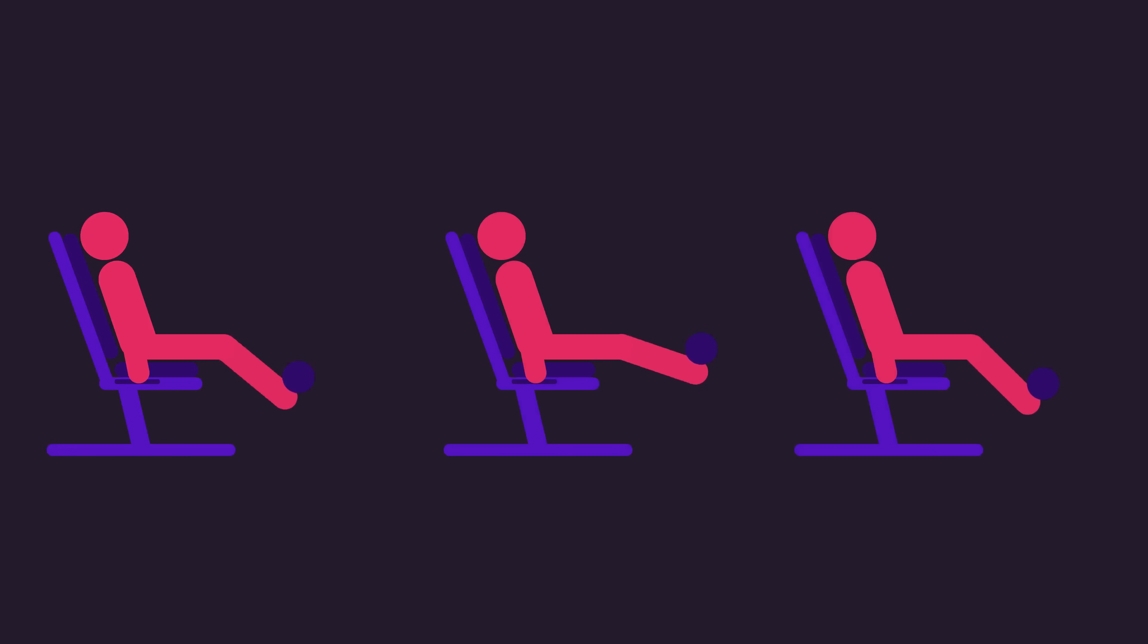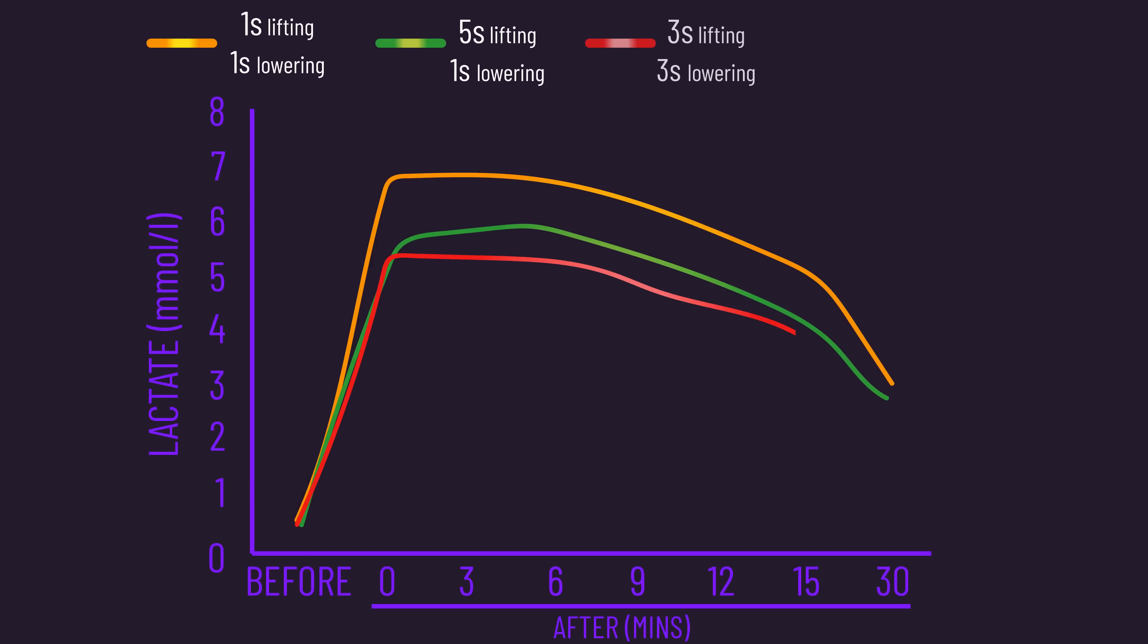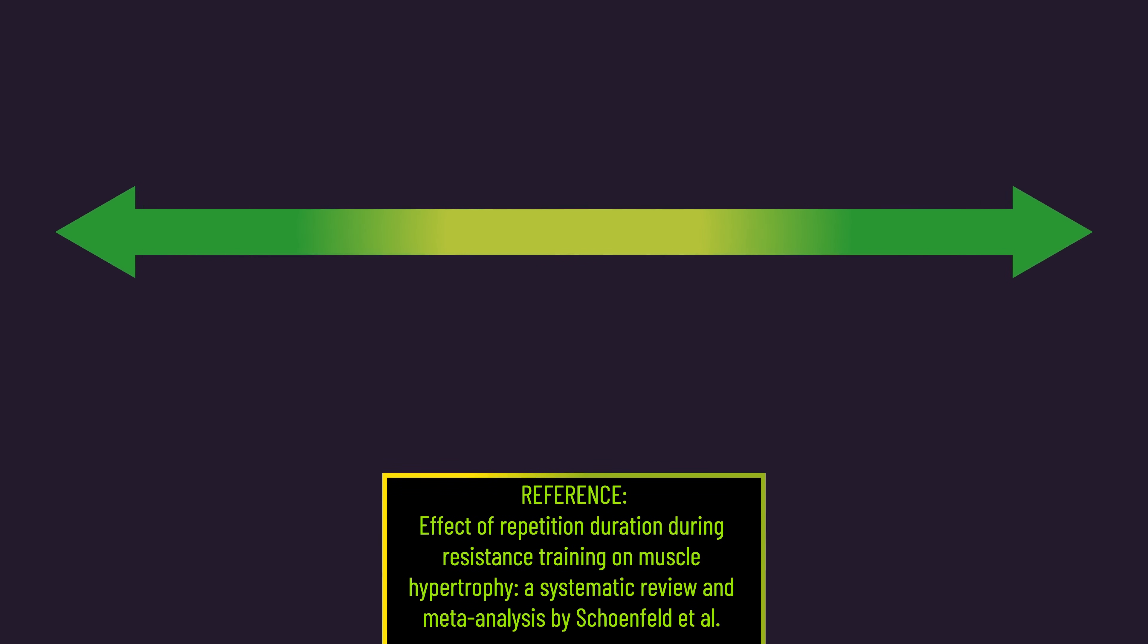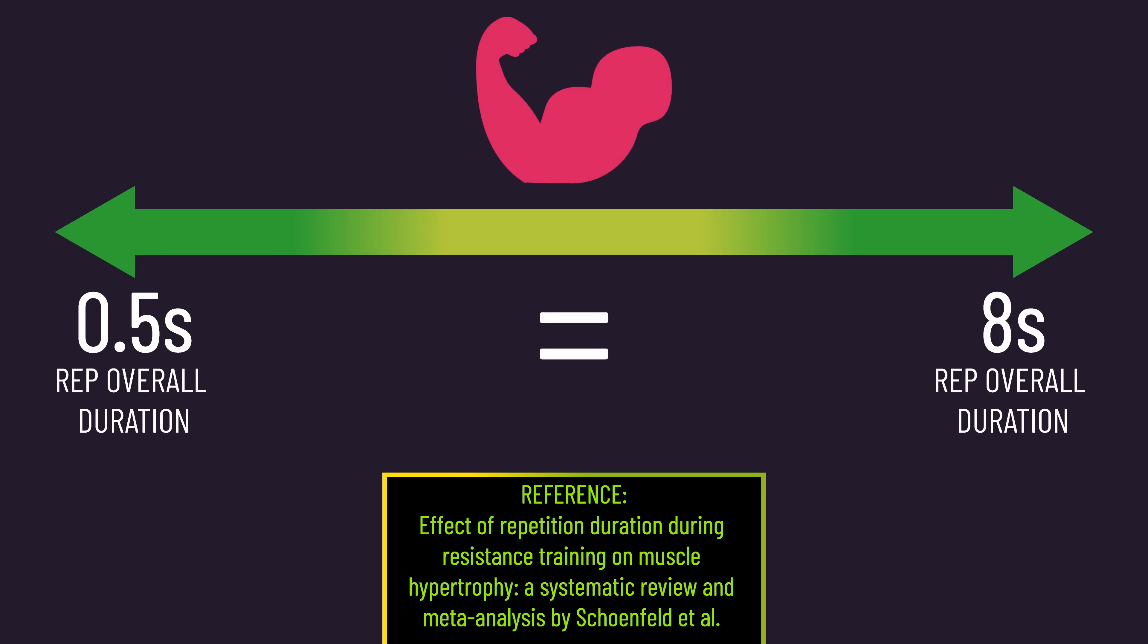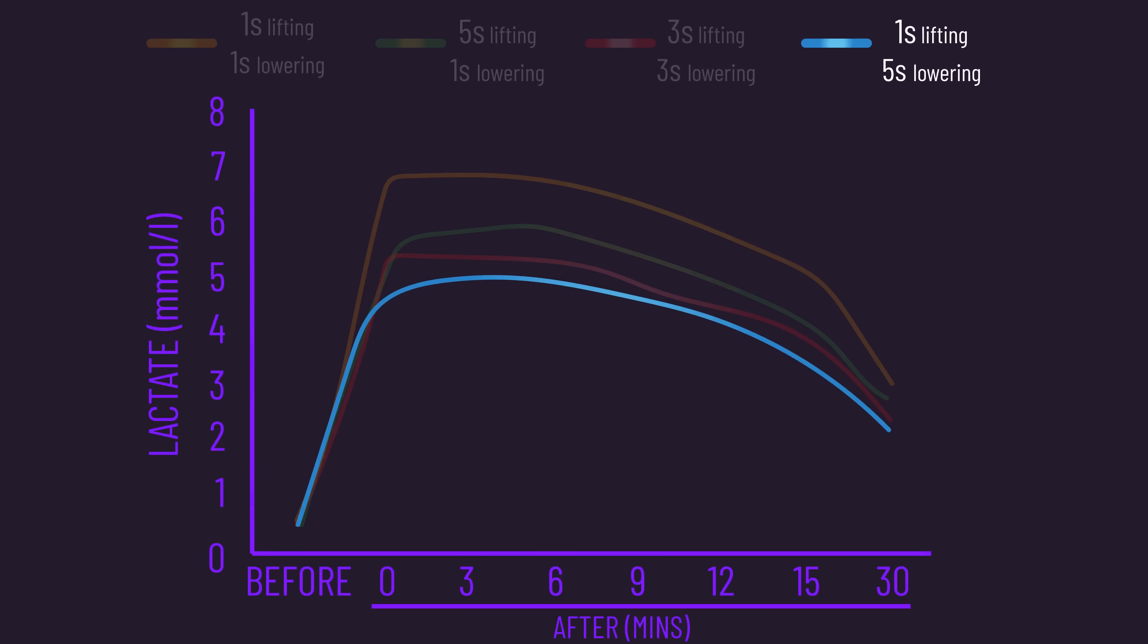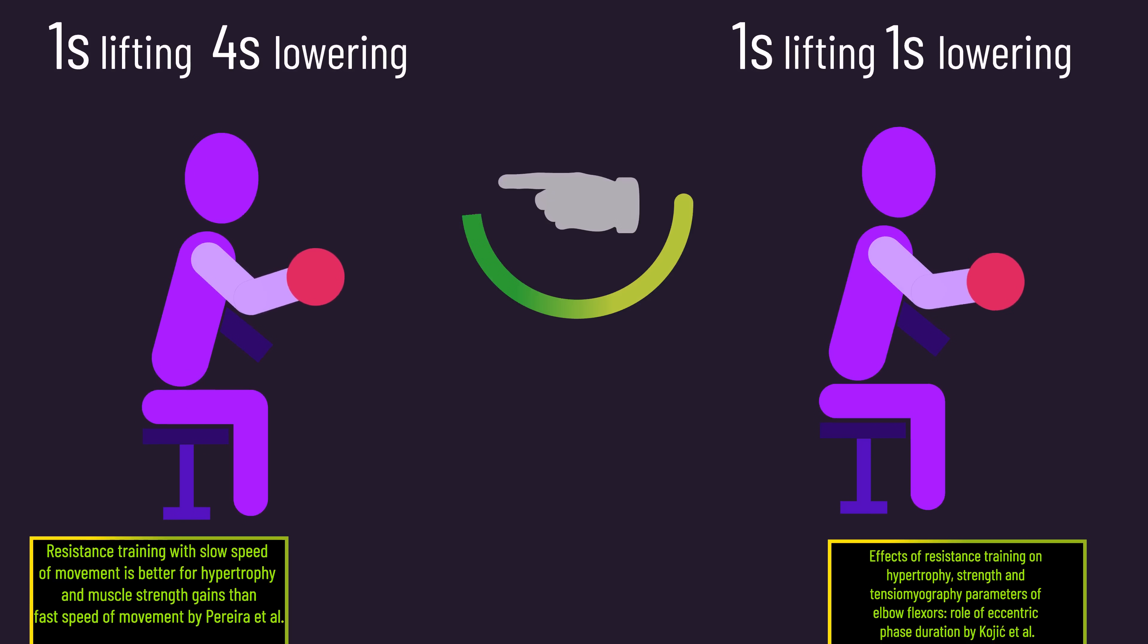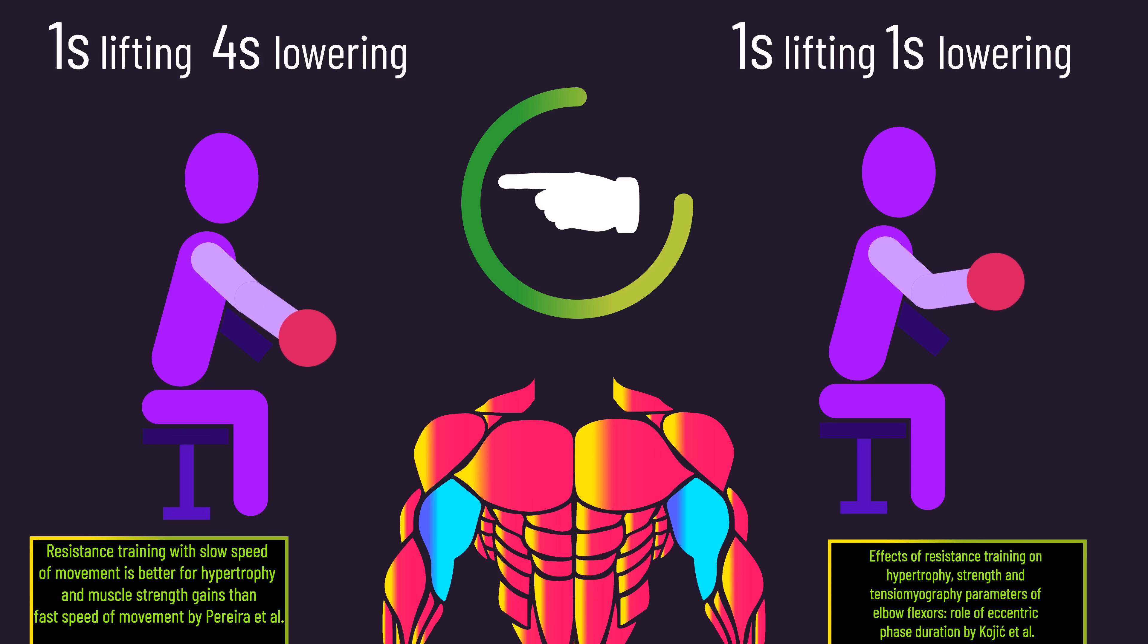Different rep tempos, as indicated by this 2009 Japanese paper, produce different lactate increases even when reps are performed to exhaustion. But the literature indicates when reps are performed to failure, a wide range of rep tempos are similar for building muscle. In fact, the Japanese paper indicates a slower lowering tempo produces the lowest lactate increases, yet some research indicates slower lowering tempos could build more muscle. Though this isn't a consistent finding and I plan to cover this more in future videos.